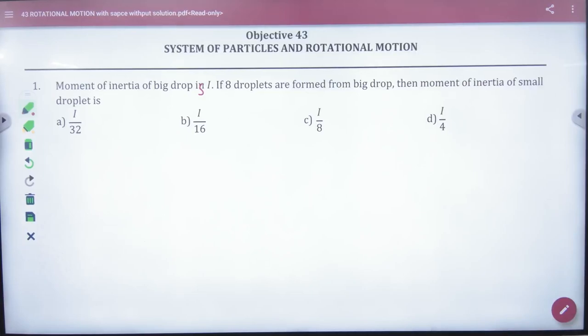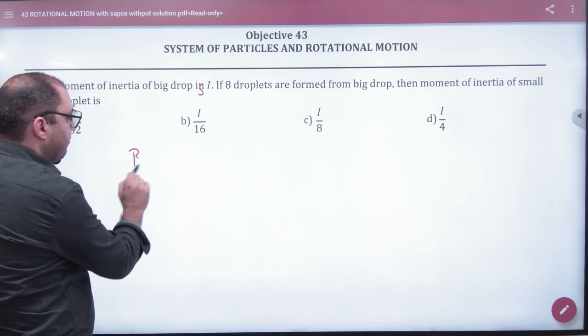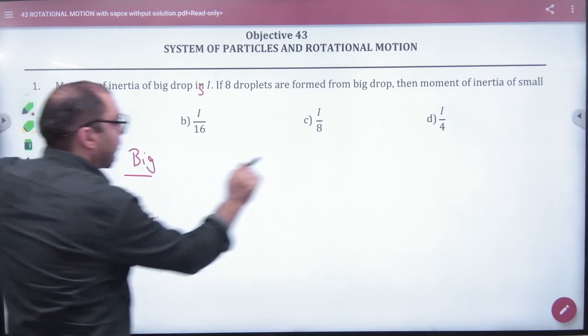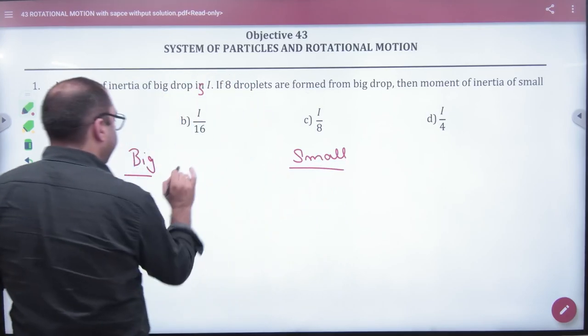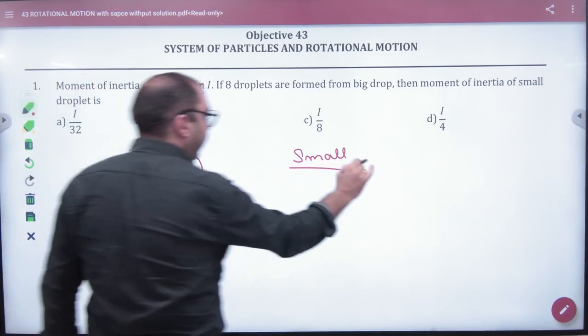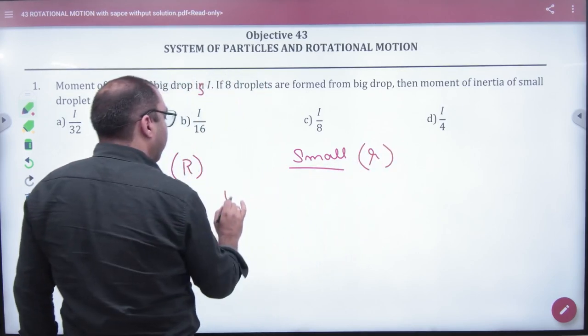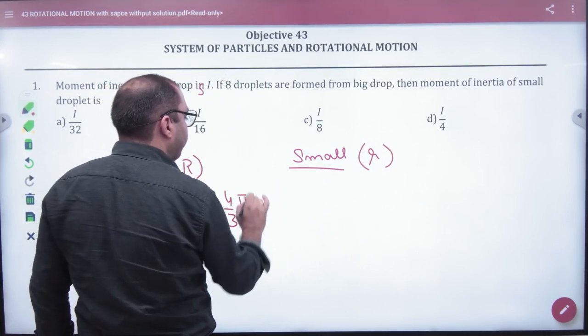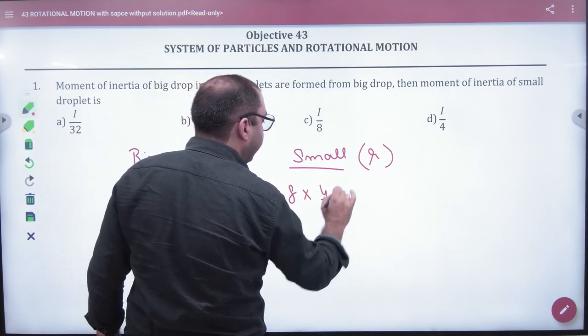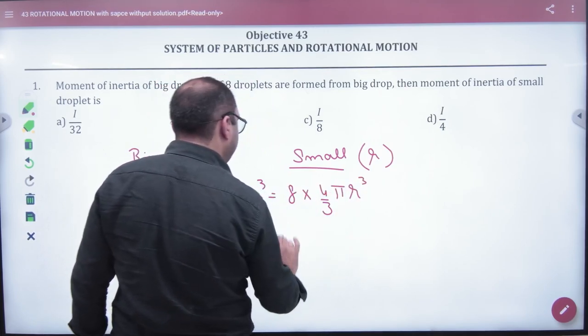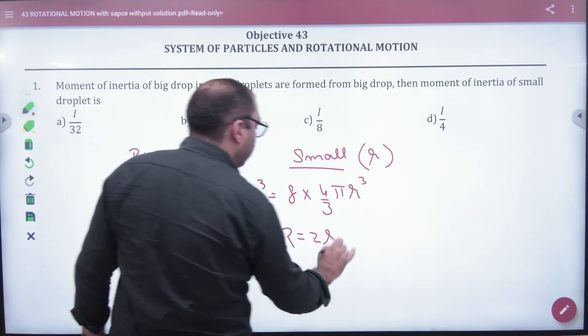Next question: the moment of inertia of a big drop is I. One big drop breaks into small drops. What is the radius R? First, let's equate the volume. The volume 4/3 πR³ equals 8 times 4/3 πr³. So the value will be R = 2r.